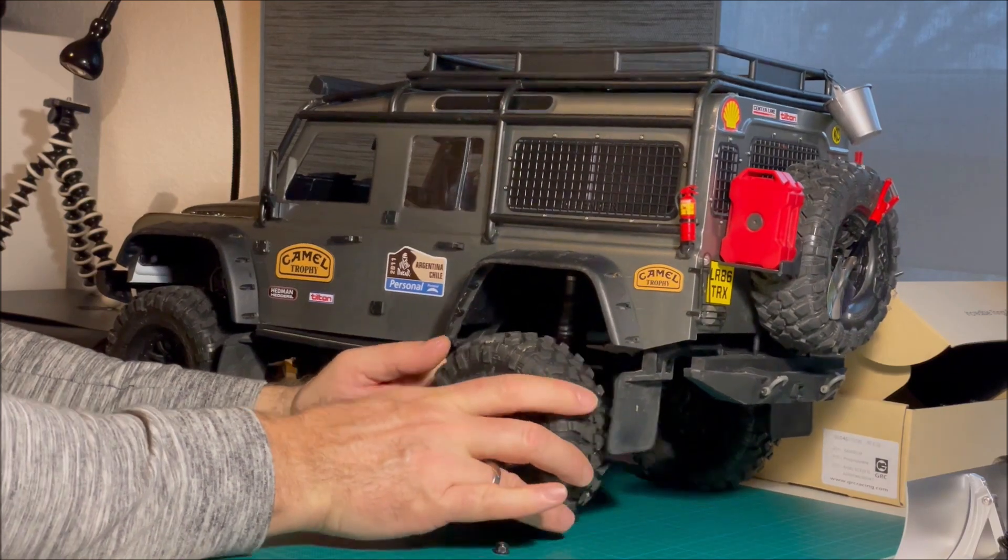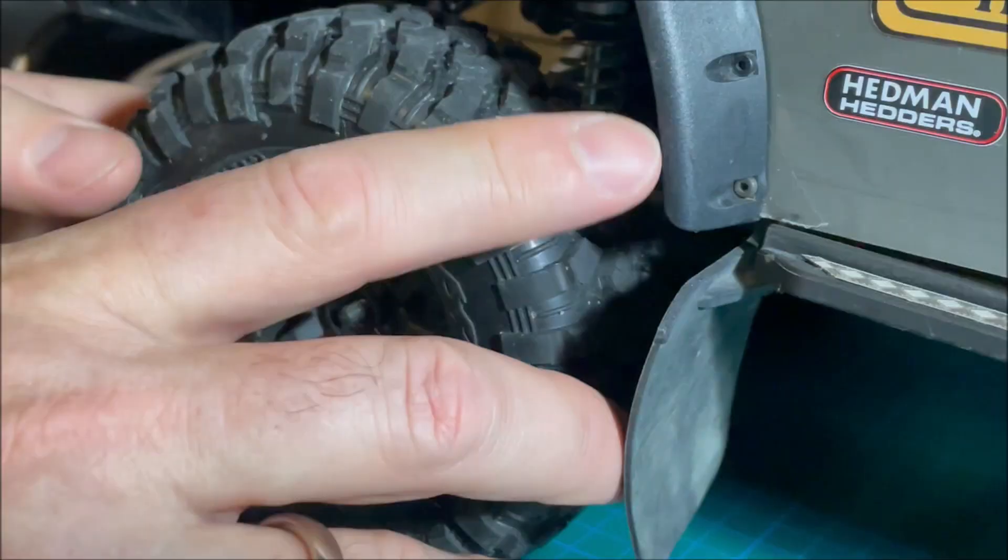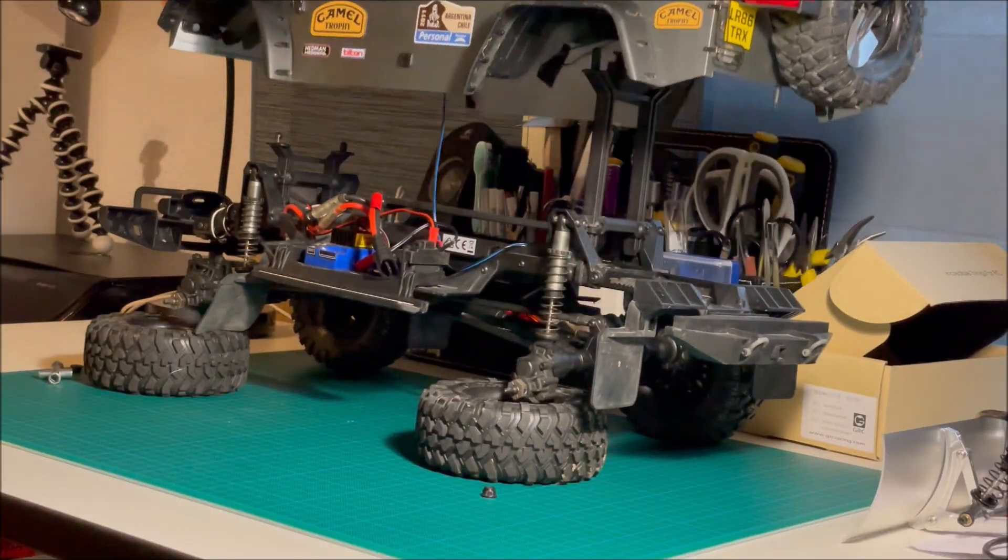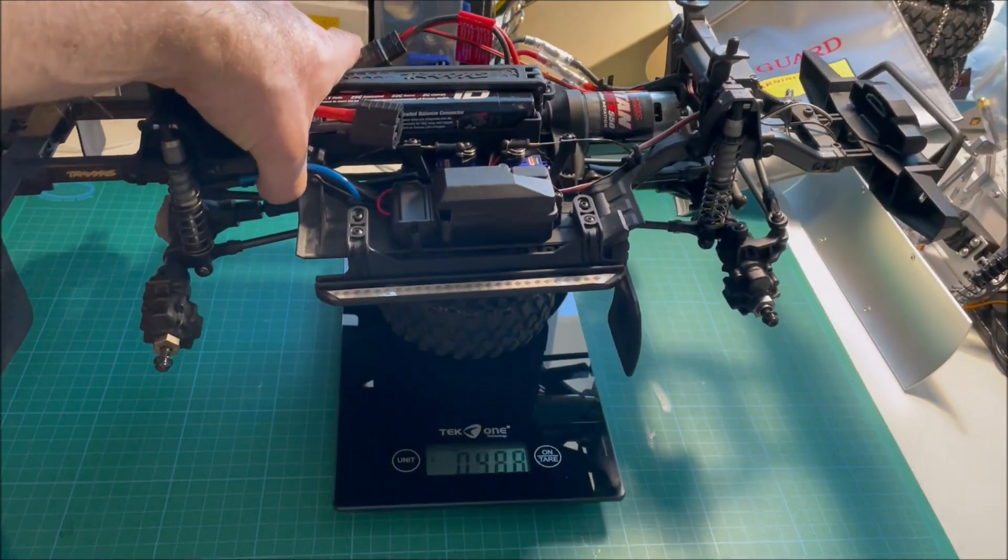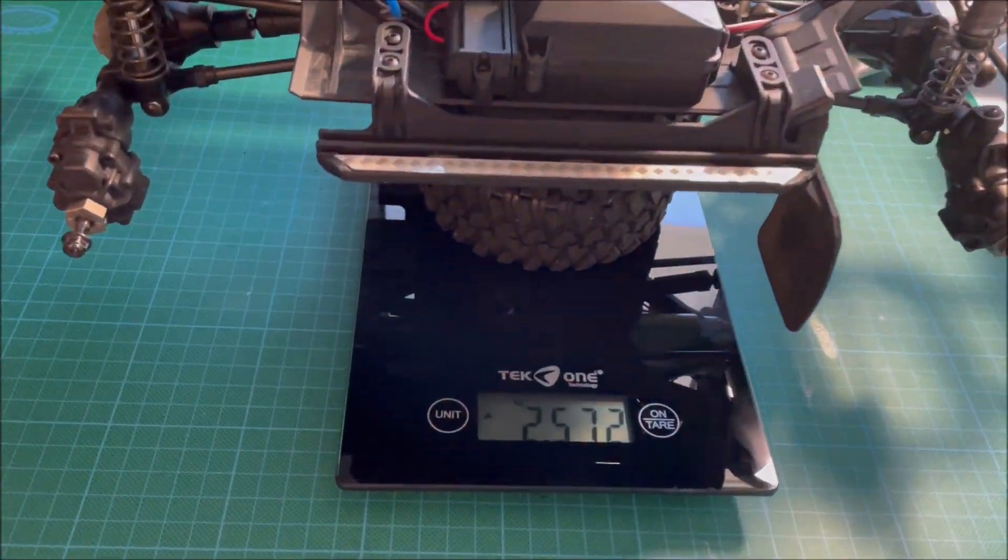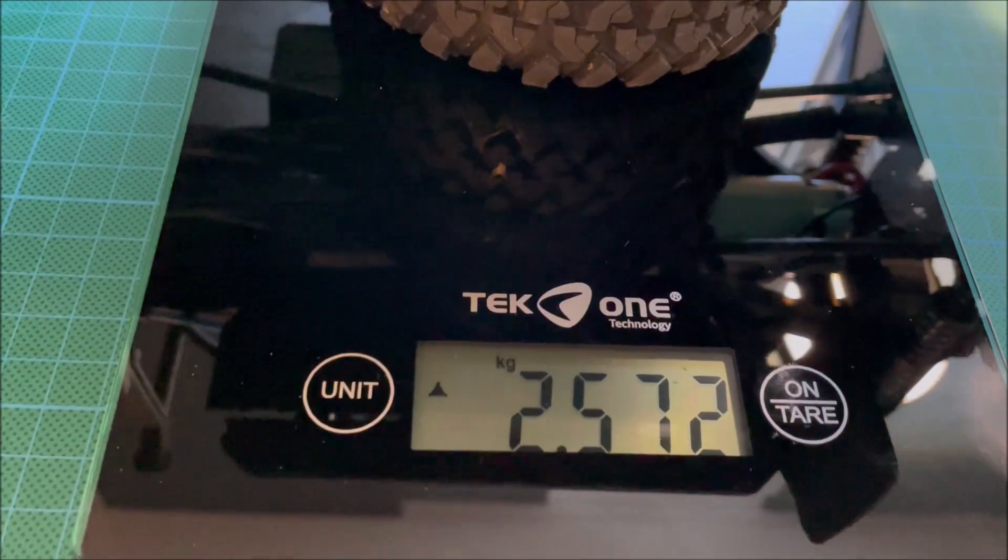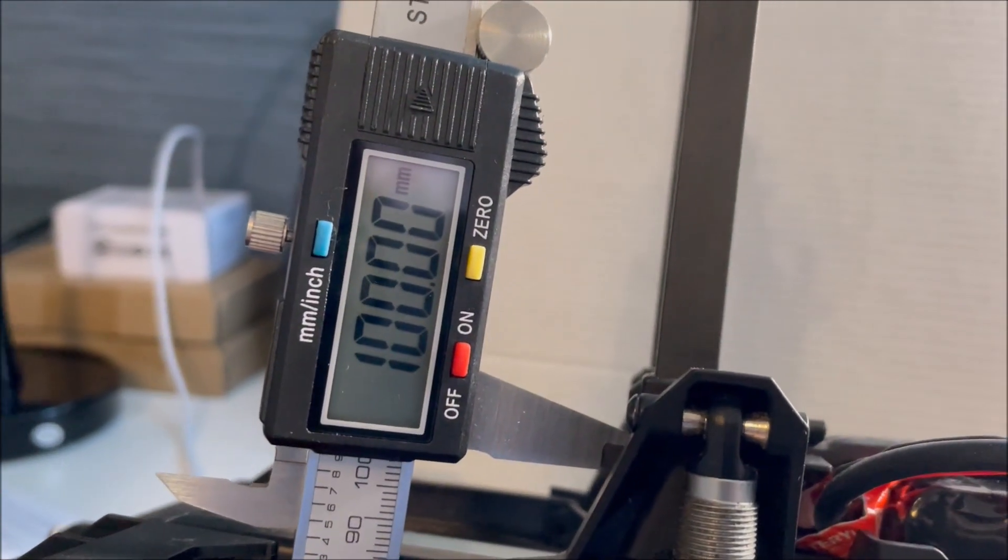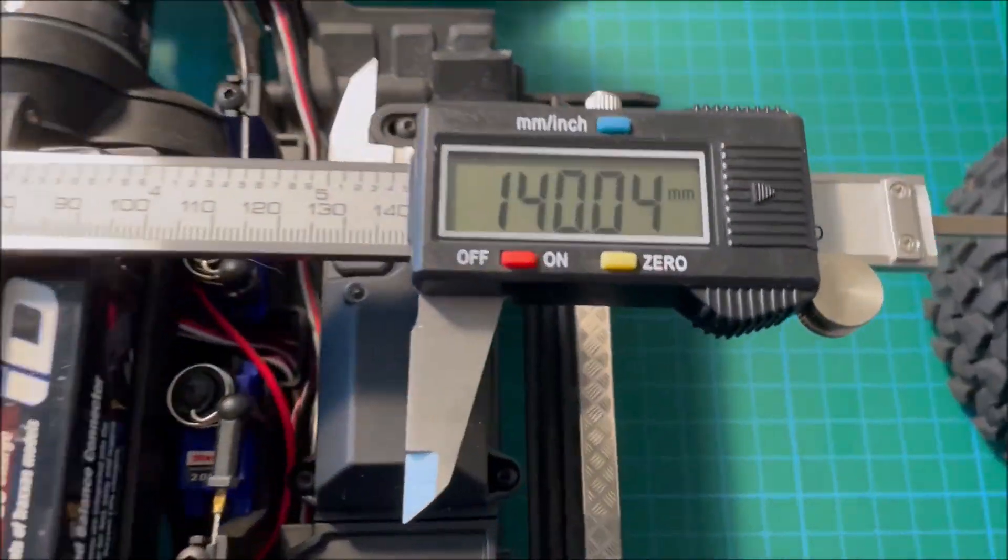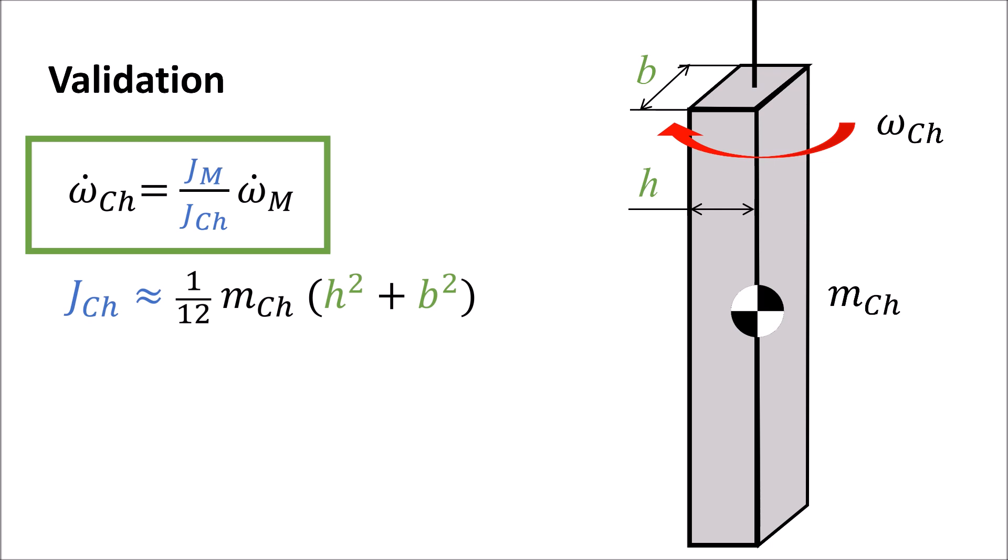After demounting wheels and body, we could measure the mass and the main dimensions of the chassis that carry the mass. With these values, we could determine the moment of inertia of the chassis.